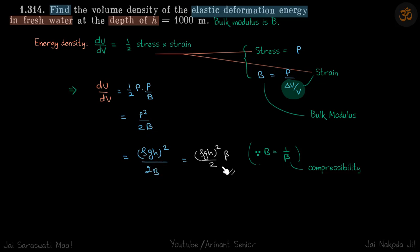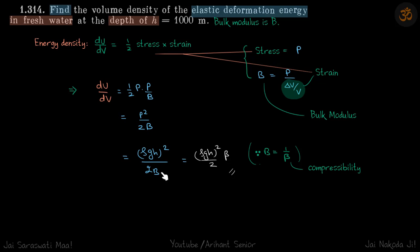So our answer becomes (ρGH)² / 2B. We also know that compressibility β equals 1/B, so we can equivalently write this as (ρGH)² β / 2. Both answers are correct.